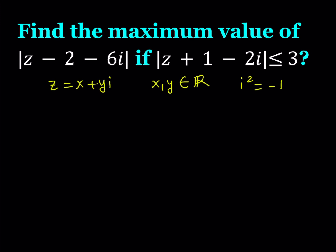Sometimes people say i is the square root of negative 1, but you've got to remember that negative 1 has two square roots in the complex world, so we've got to be very specific about that.